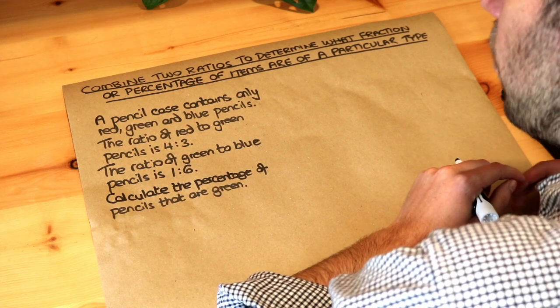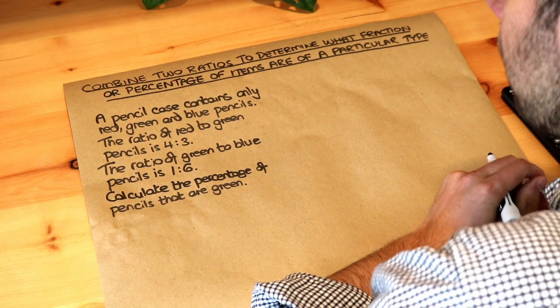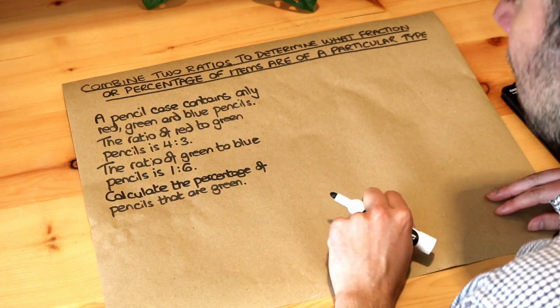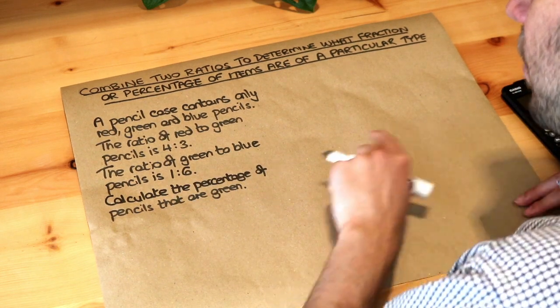Now the previous video we saw how we can combine two ratios into one ratio, and if we've got everything as one ratio it makes it easier to reason about it. For example, questions like this. So let's do it how we did before.